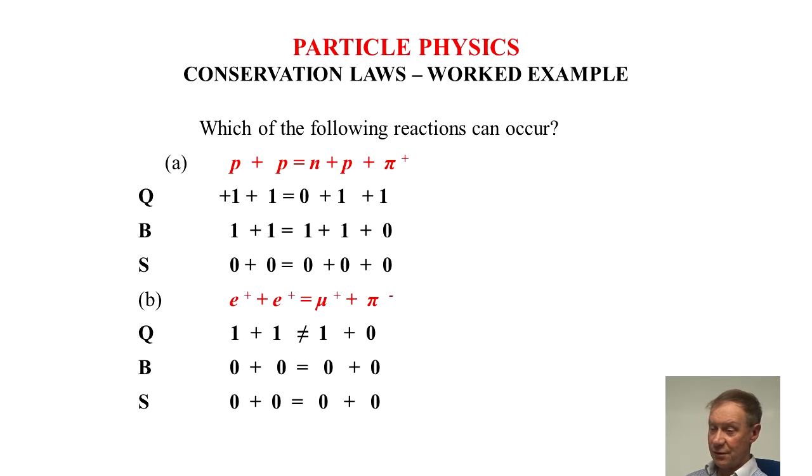Neutron has no charge, proton is plus one and pi is plus one, so two equals two. So that is possible from the charge point of view.